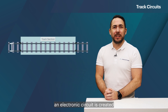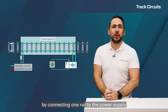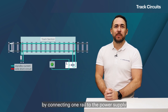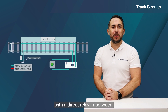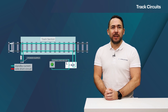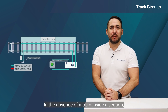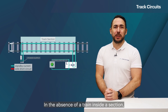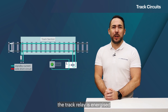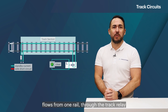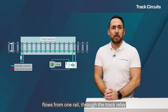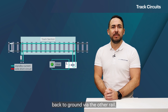Afterwards, an electronic circuit is created by connecting one rail to the power supply and the other to ground with a track relay in between. In the absence of a train inside a section, the track relay is energized as the electronic current flows from one rail through the track relay back to ground via the other rail.